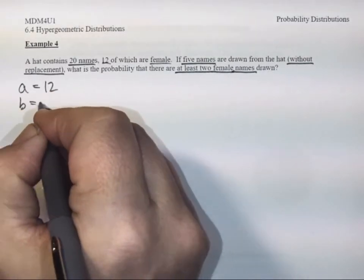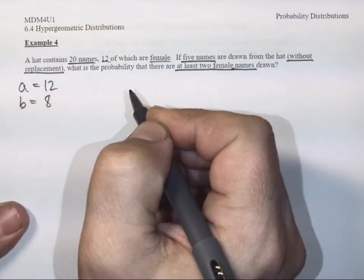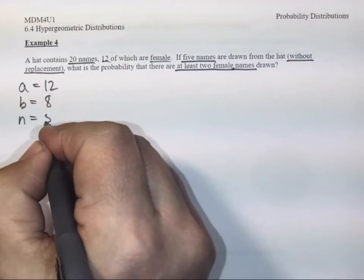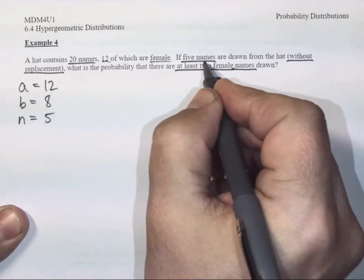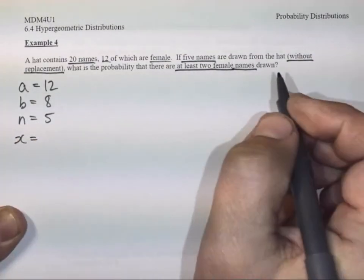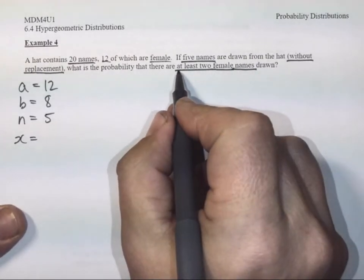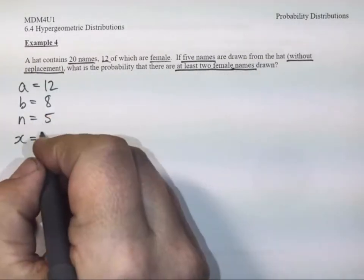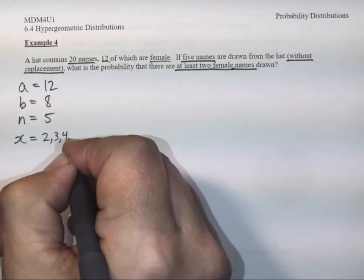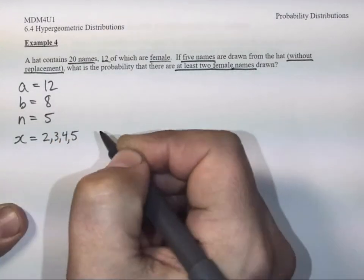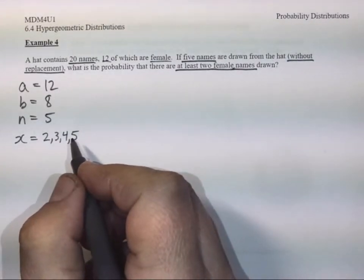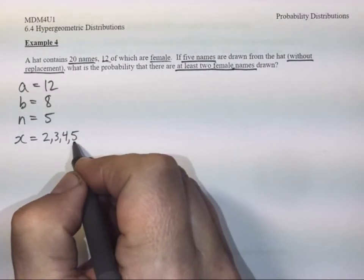The number of unsuccessful things is 8. The number of trials here is 5 because we're drawing five names out of the hat, and we actually even have an X value. We need at least two female names drawn, so that means we could have two, we could have three, we could have four, or we could have all five female names. That's what our X values need to be. I don't want to calculate all those though. There's got to be an easier way to do this.